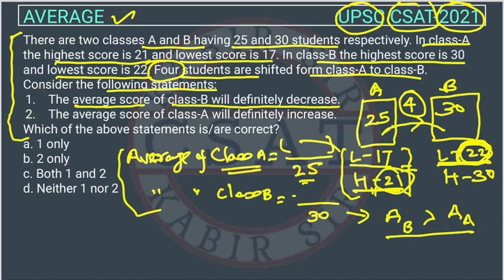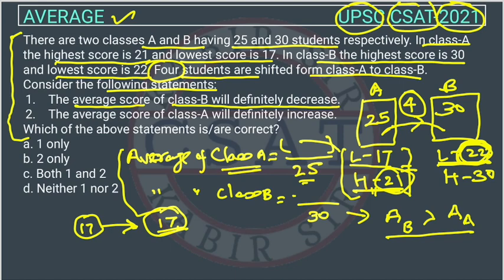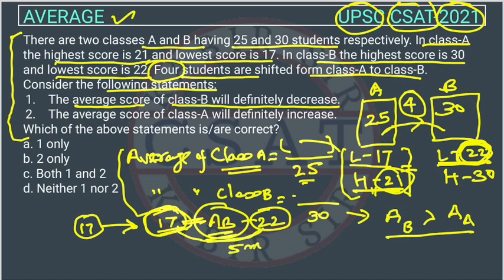Now, four students are being shifted from Class A to Class B. If we assume the students shifted have the minimum marks from Class A, say 17, then students with marks below 22 are entering Class B. Since Class B's average was at least 22, adding students with marks around 17 creates a difference of about 5 marks, so the average of Class B will decrease.